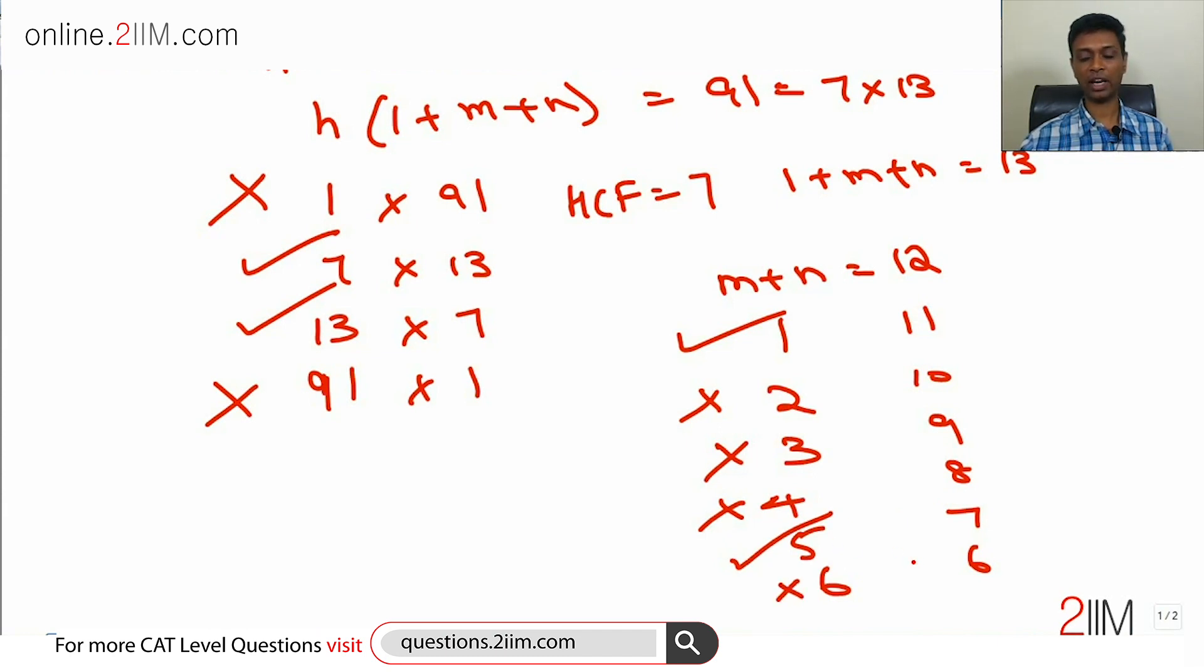So m equal to 1, n equal to 11, HCF is 7, or the numbers being 7 and 77. 7 plus 77 plus HCF is 7, that is 91. Second possibility: numbers being 35 and 49. 35 plus 49 plus 7, that also works.